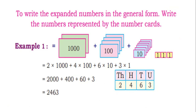To write the expanded numbers in the general form, write the numbers represented by the number cards. Here, 1,000 cards — 2 are there, so 2,000. 100s — 4 are there. 10s — 6. Units — 3. This is 2,463.